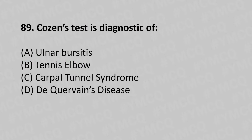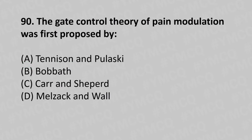Moving to our 89th question. Cozen's test is the diagnosis of: option A ulnar bursitis, option B tennis elbow, option C carpal tunnel syndrome, option D Dupuytren's disease. The answer is option B, tennis elbow.